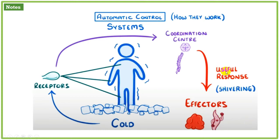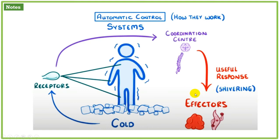The effectors show a response. The coordination center sends a message to the effectors as a response. The response shown is shivering. Shivering is the homeostasis mechanism — the receptors detect the cold, send a message to the coordination center, and the coordination center sends a message to the effectors, which respond by shivering to maintain body temperature.